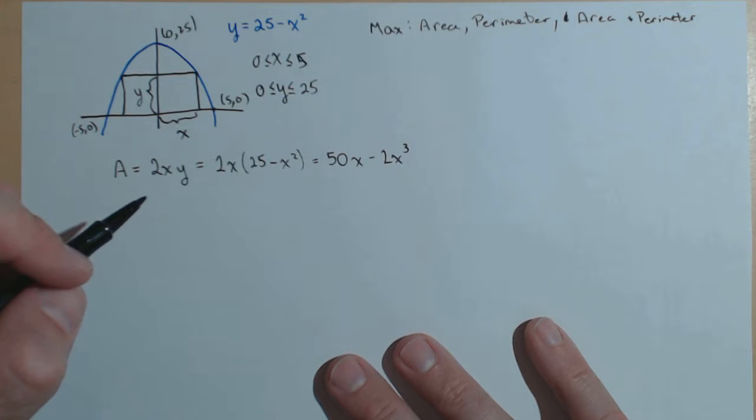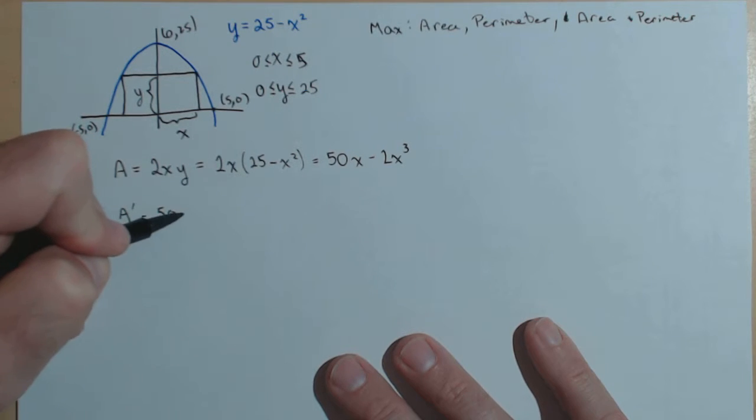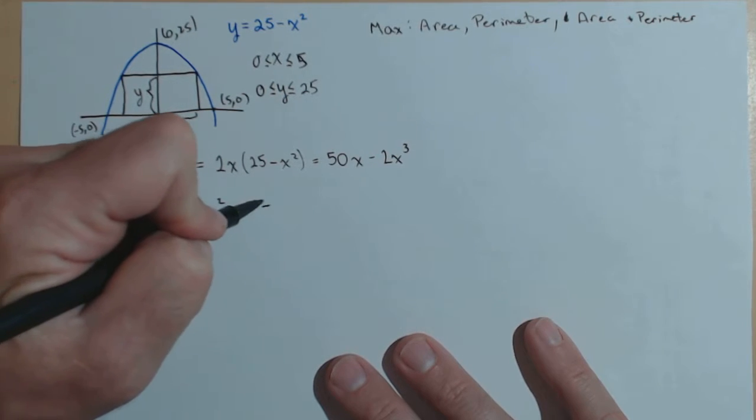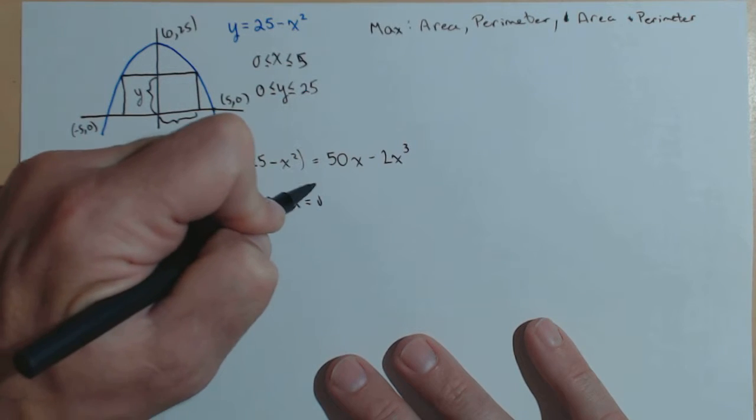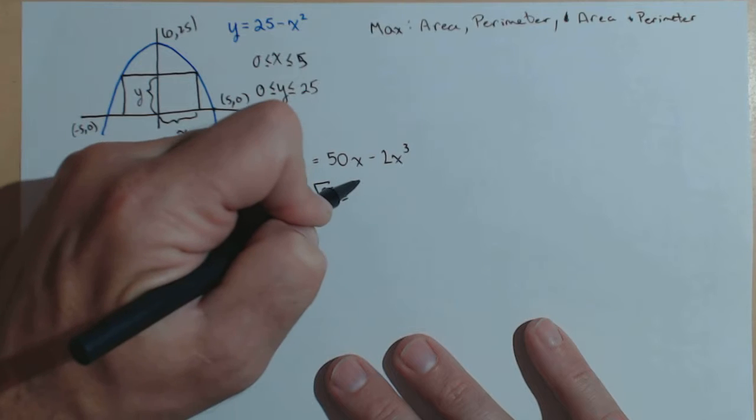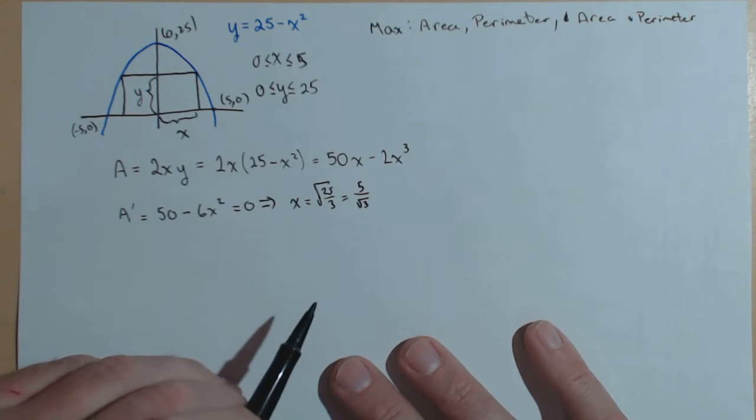So 2x times 25 minus x squared equals 50x minus 2x cubed. Alright, so now we're going to do the derivative and see what we got. So a prime equals 50 minus 6x squared. Set that equal to 0, and you're going to get that x is the square root of 25 over 3 or 5 over rad 3. I'm not too worried about rationalizing the denominator.